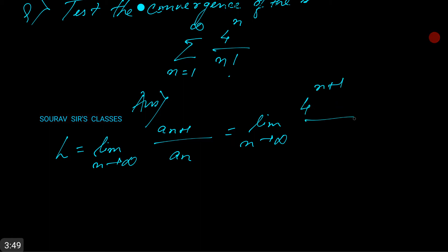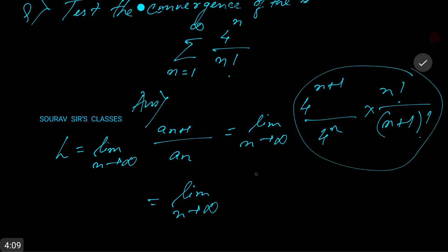So the limit turns out to be limit n tends to infinity, this thing gets reduced to 4 by n plus 1.